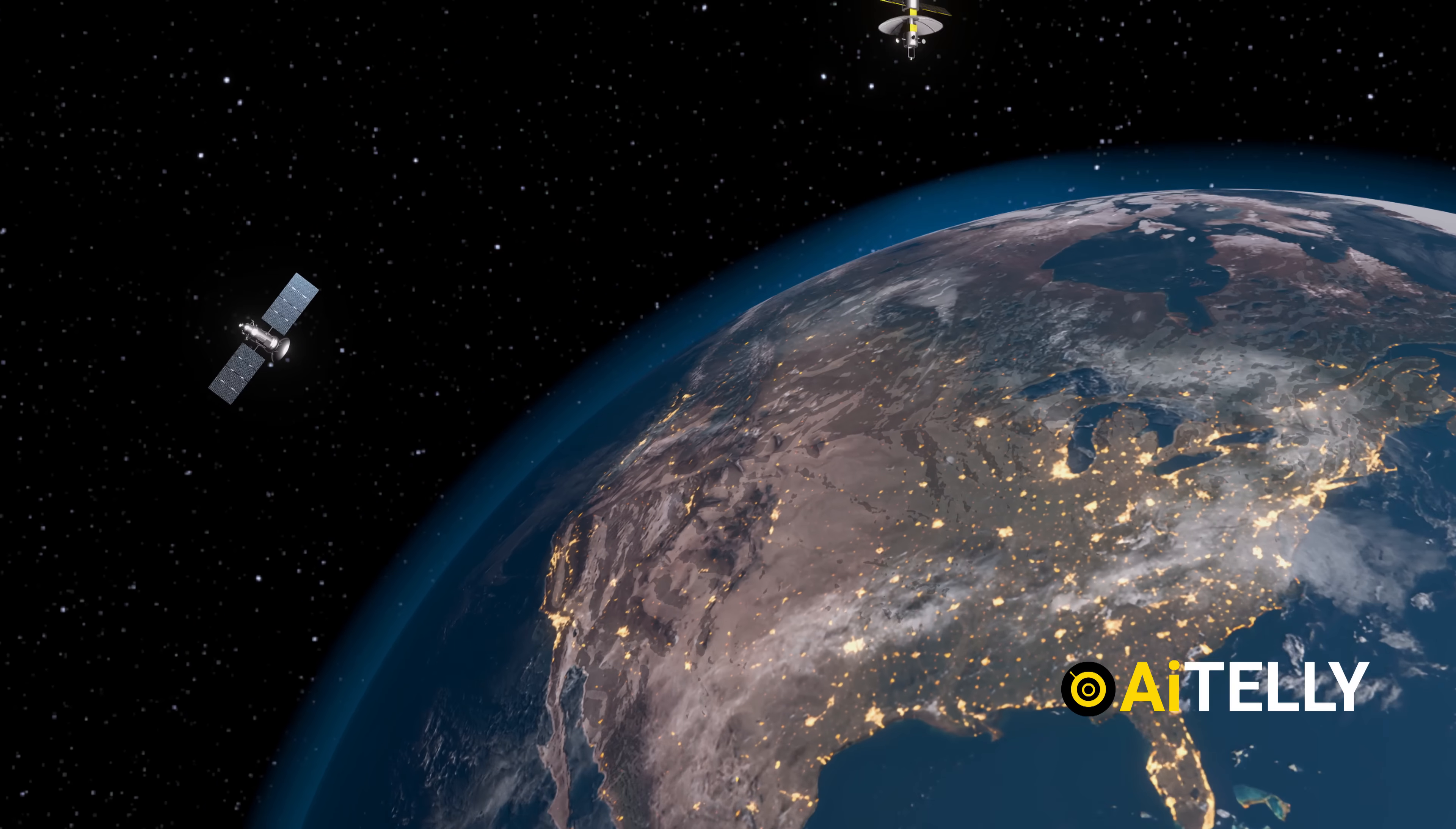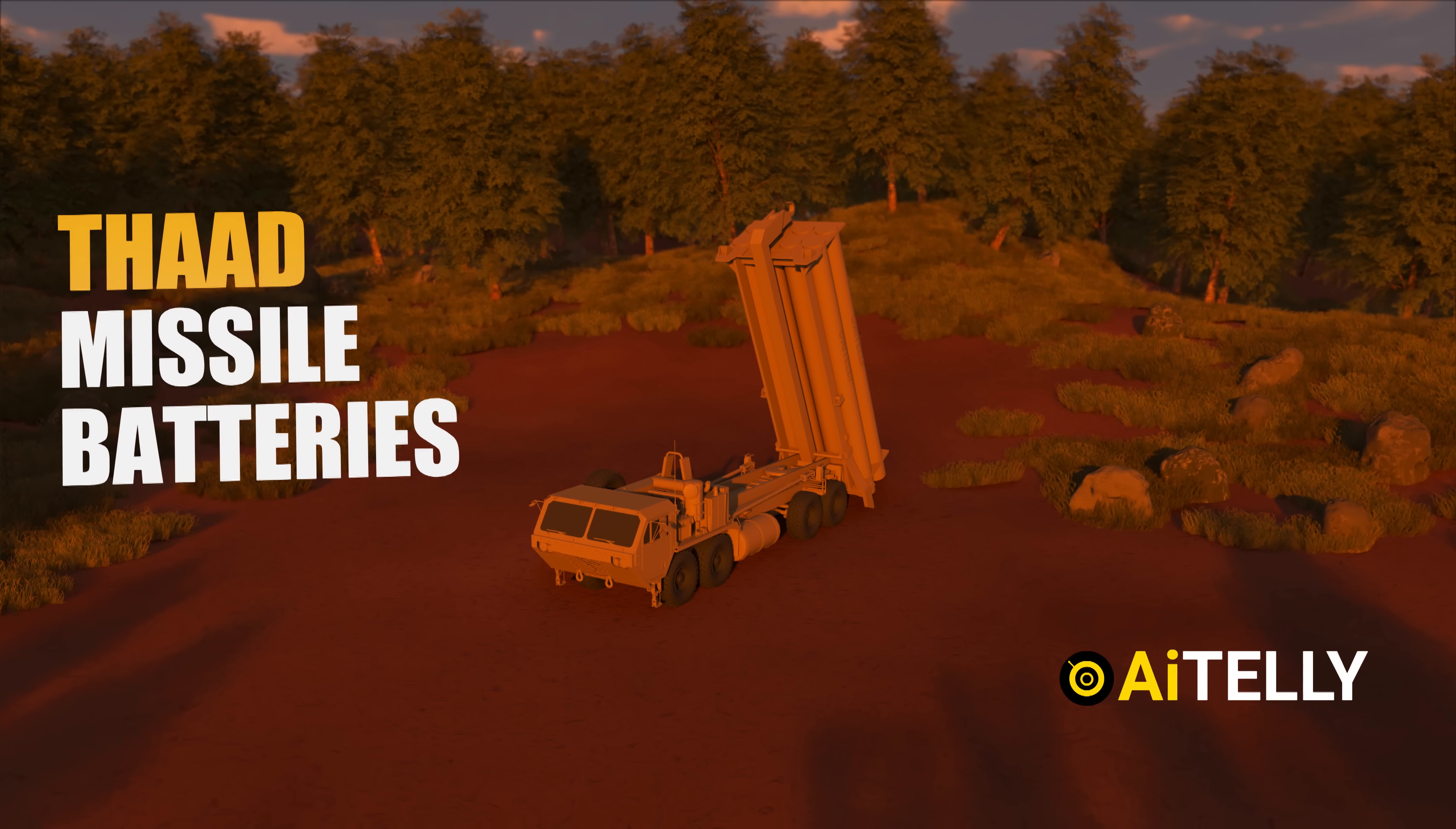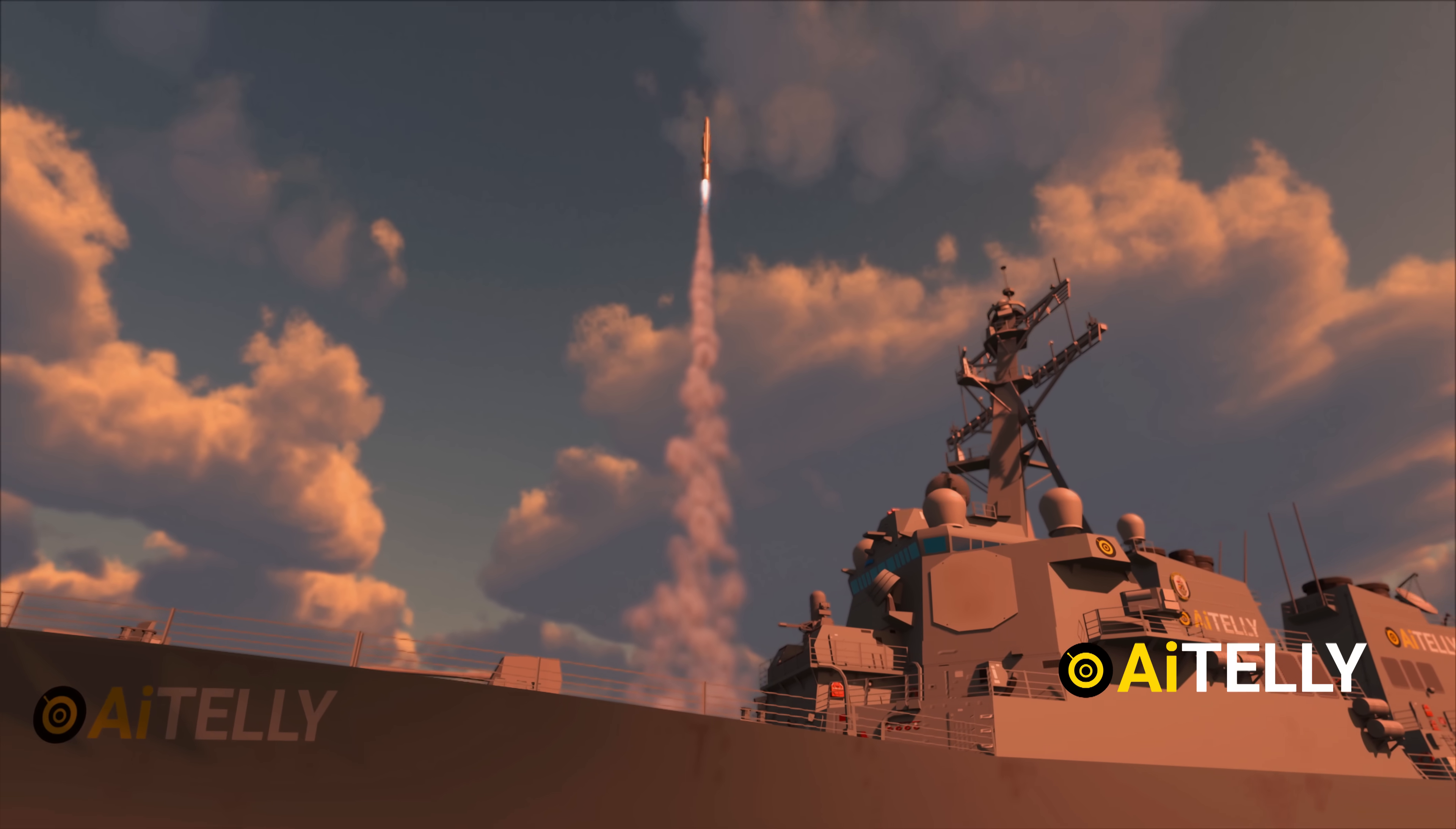At the heart of the shield are space-based sensors, a constellation of at least 100 to 1,000 satellites or more. On the ground, interceptor systems like the existing THAAD missile batteries stand ready to take action. At sea, the shield is reinforced by expanding the capabilities of naval missile defense systems. Modern destroyer ships carry advanced interceptors, providing a mobile and flexible layer of protection.